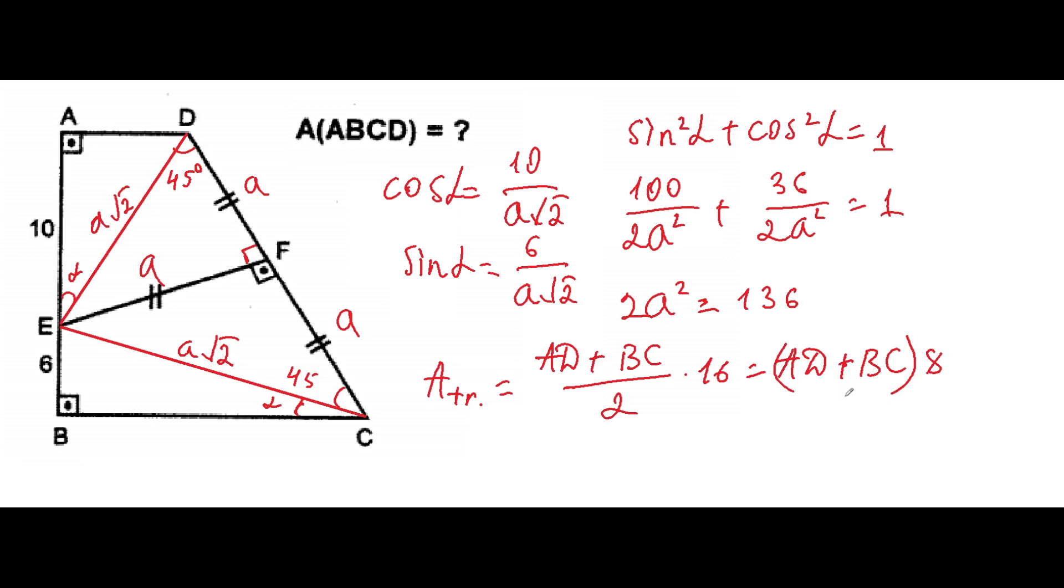The last thing that we're gonna do is to find out AD and BC. AD will be equal to √(2a² - 100), which means that we're given that 2a² equals 136, so AD will be equal to 6. And the same way we can find out BC, and it will be equal to 10.